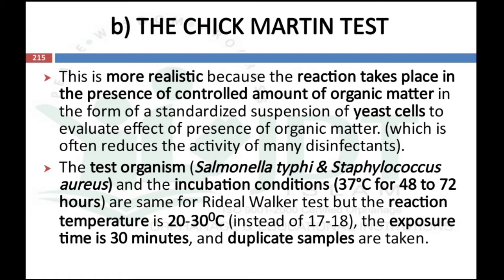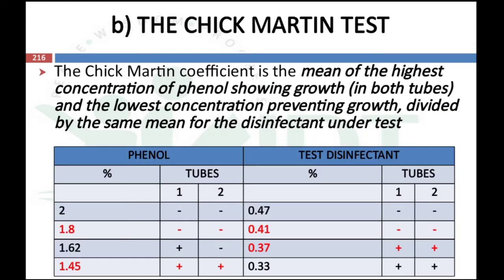Thereby we can overcome the limitations of the Riedel-Walker test. The Chick-Martin coefficient is determined by dividing two ratios: the mean of the highest concentration of phenol showing growth in both tubes and the lowest concentration preventing growth, divided by the same mean for the disinfectant under test.